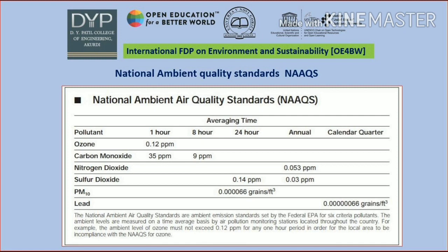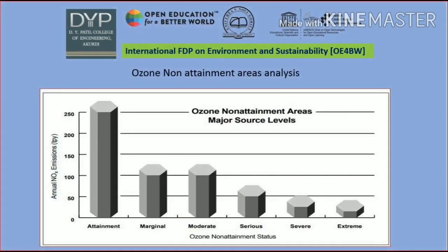This covers the national ambient air quality standards (NAAQS) pollutants: carbon monoxides, nitrogen dioxide, sulfur dioxide, PM lead, and ozone. Here the ozone non-attainment areas from the major source levels are shown, including attainment, marginal, moderate, serious, severe, and extreme ozone classification levels.